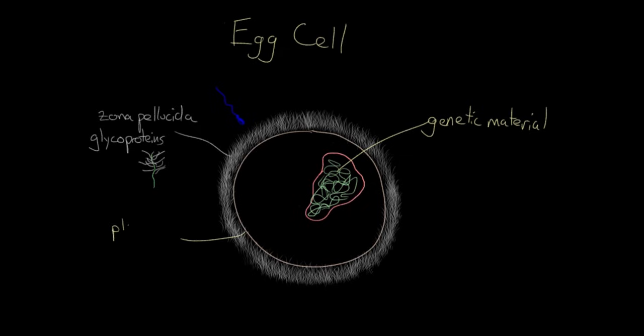And the edge of the egg cell is the actual plasma membrane. Once the sperm can deliver its genetic material beyond that, fertilization has occurred.